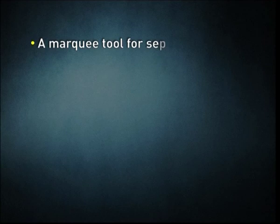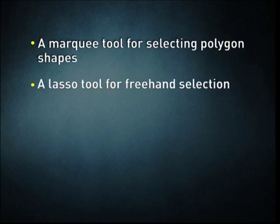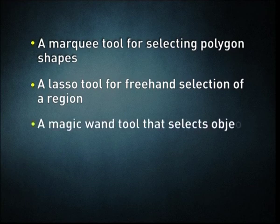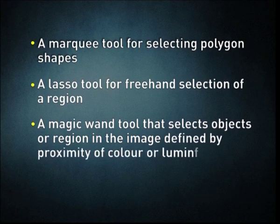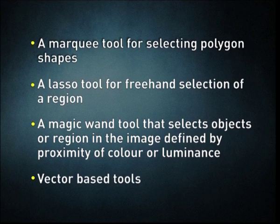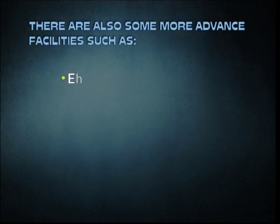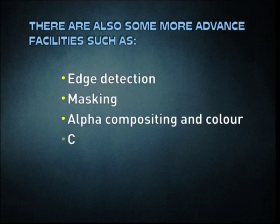Selection stands out as the primary and most important function. One of the prerequisites for many editing applications is a method of selecting parts of an image and applying changes selectively without affecting the entire picture. Most graphic programs have several means of accomplishing this: a marquee tool for selecting polygon shapes, a freehand selection tool, a magic wand tool that selects objects or regions defined by proximity of color or luminance, and vector-based tools. There are also advanced facilities such as edge detection, masking, alpha compositing, and color channel-based extraction. The border of a selected area is often animated with the marching ants effect to help the user distinguish the selection border from the image background.